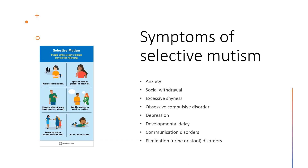Selective mutism can start at any age but most often starts in early childhood between ages two and four. The main warning sign is the marked contrast in the child's ability to engage with different people, characterized by a sudden stillness and frozen facial expression when they are expected to speak to someone outside their comfort zone.